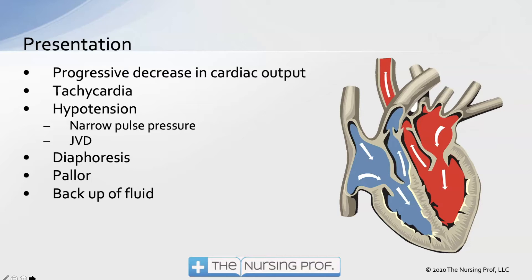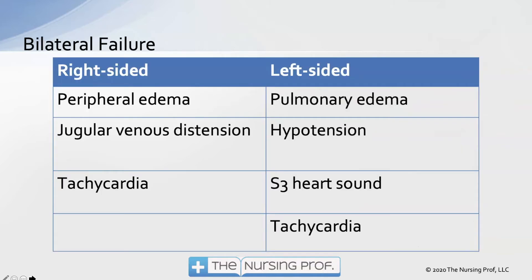Hypotension with a narrowed pulse pressure, jugular venous distension, diaphoresis, pallor, and a backup of fluid. Depending on which side of the heart is involved will indicate where we're going to see the fluid. If the right side is involved, we'll get peripheral edema, jugular venous distension, and tachycardia. If the left side is involved, we will see pulmonary edema, hypotension, an S3 heart sound, and again tachycardia.